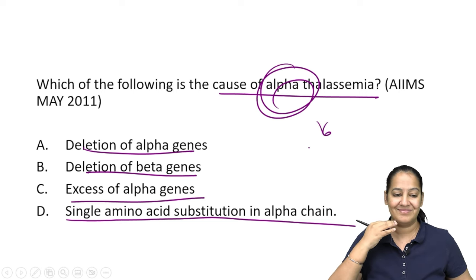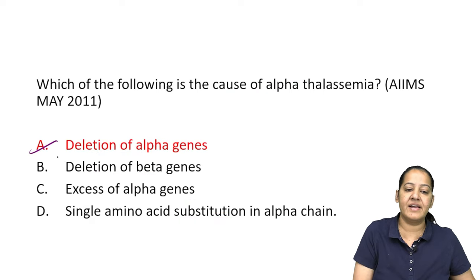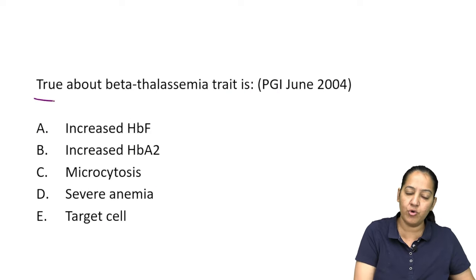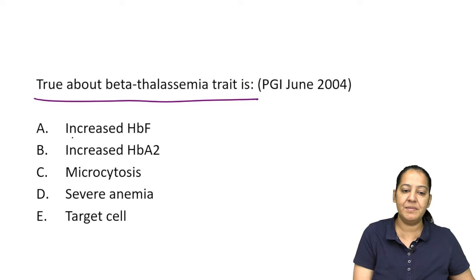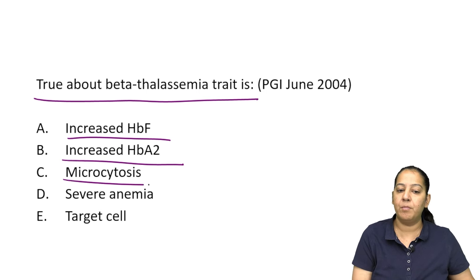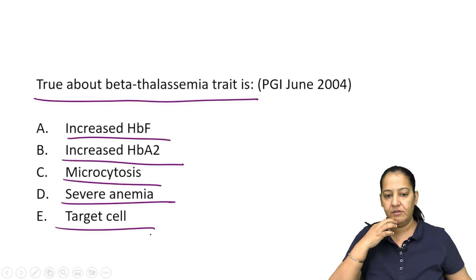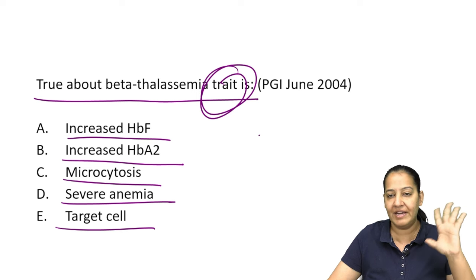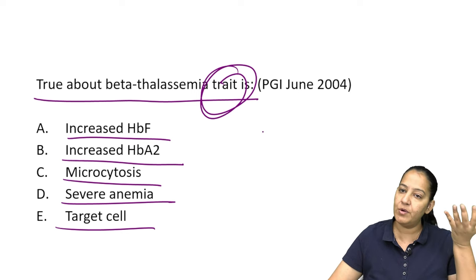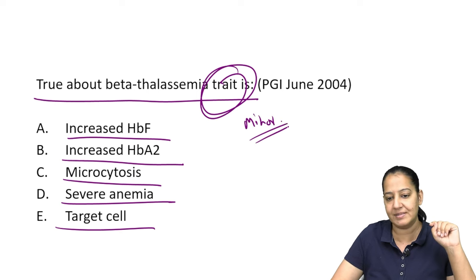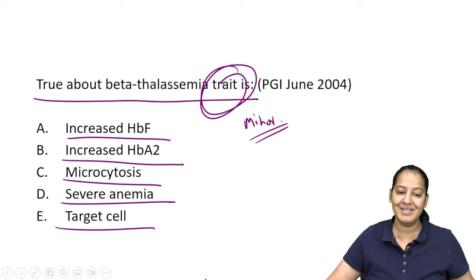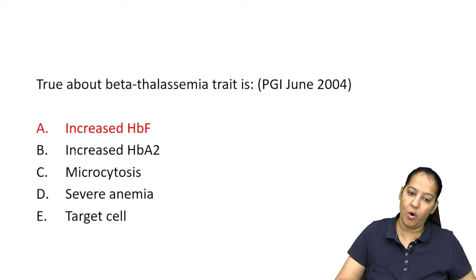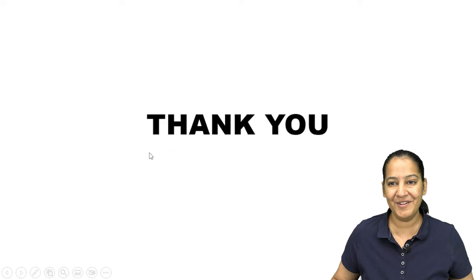MCQ 2: The cause of alpha thalassemia — correct answer is deletion of alpha gene (on chromosome 16, four genes total). MCQ 3: True about beta thalassemia minor (trait) — options include increased HbF, increased HbA2, microcytosis, severe anemia, target cells. The correct answer is increased hemoglobin F. That concludes thalassemia — I hope you learned the topic well.